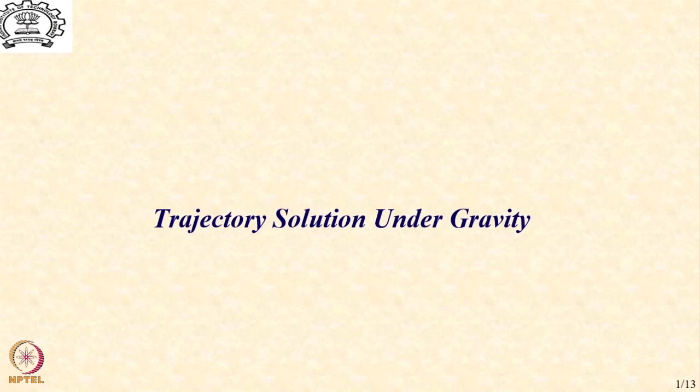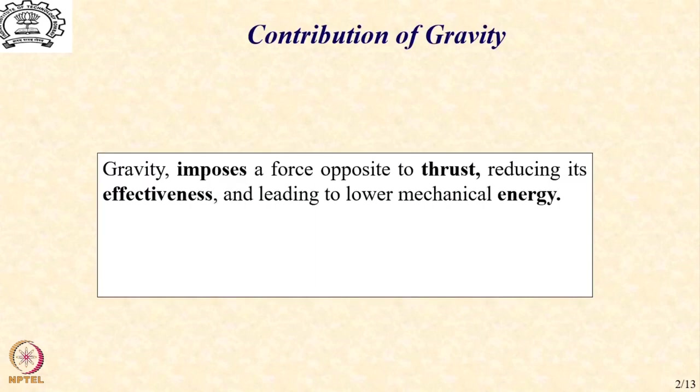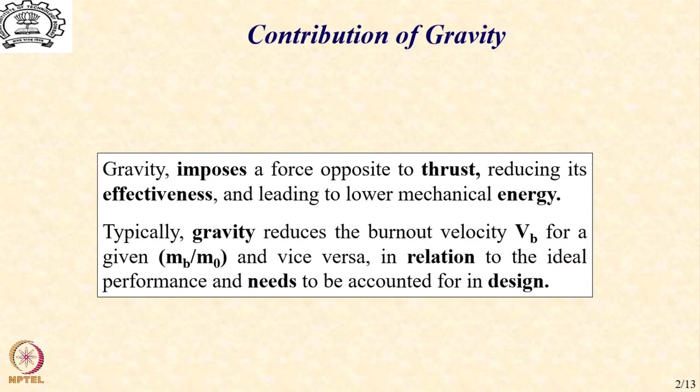Let us look at the solution for trajectory under the impact of gravity. Gravity, as we know, imposes a force opposite to thrust and thereby reduces its effectiveness and leads to lower total mechanical energy at the end of the burnout. Typically, gravity reduces the burnout velocity for a given mb by m0 and vice versa, in relation to the ideal performance that we have seen and needs to be accounted for in the design.